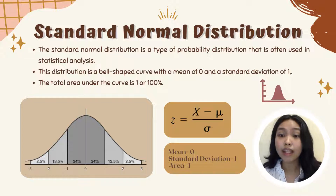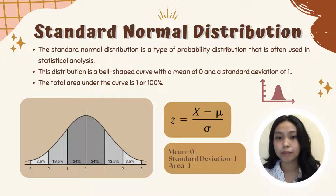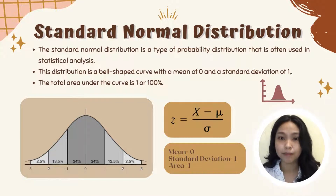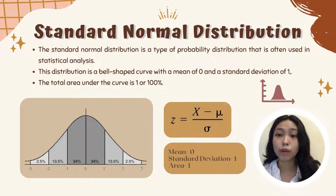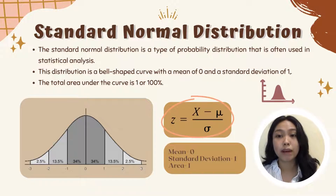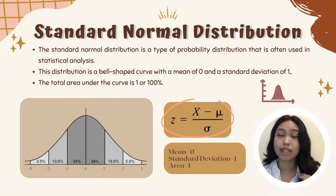The total area of the bell curve is equal to 1 or 100%. Dito sa picture, makikita natin na nakaseksyon or nakahati yung area ng curve, and each section ay may corresponding percentage na nakalagay. While ito namang nasa gilid, this is the formula na gagamitin natin to get the Z-score: z is equal to x, or the value, minus the mean, then divided by the standard deviation, which is represented by the symbol sigma.